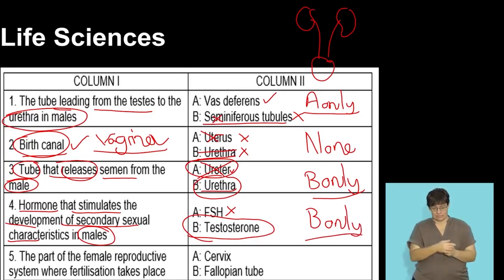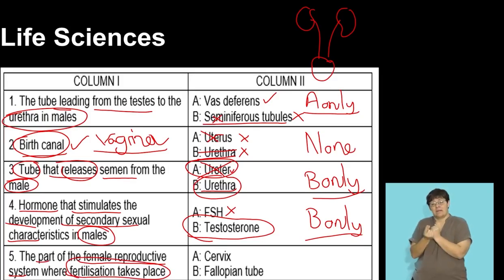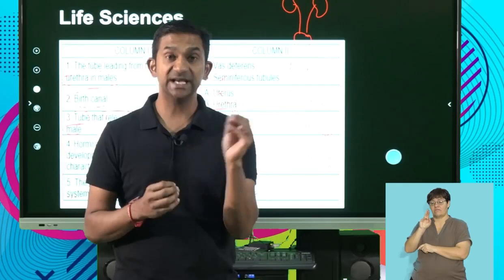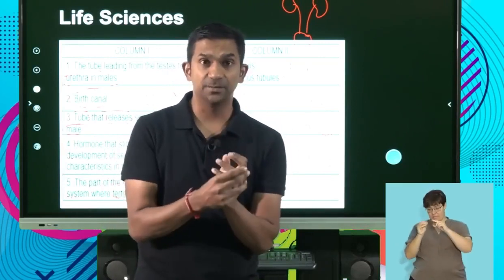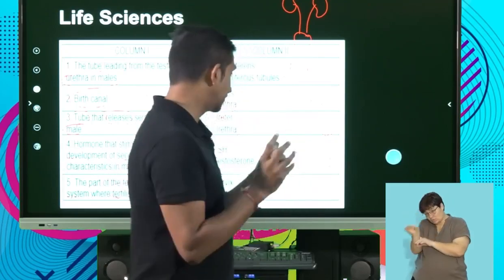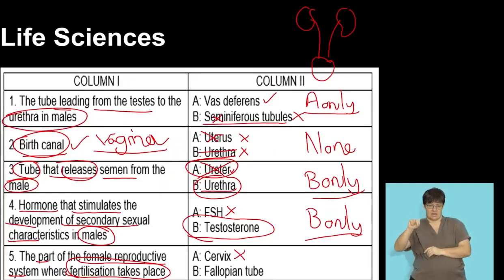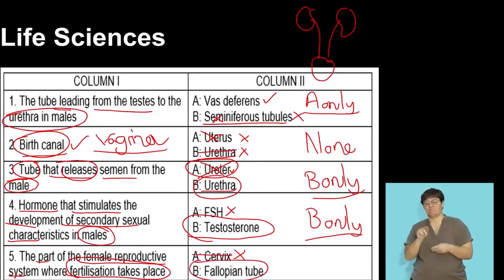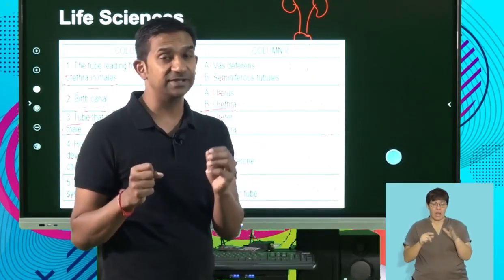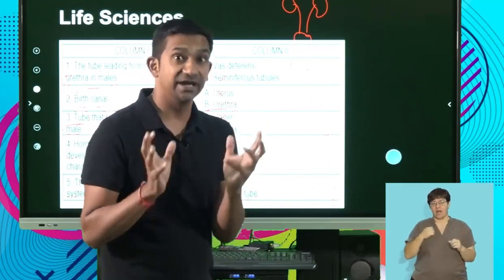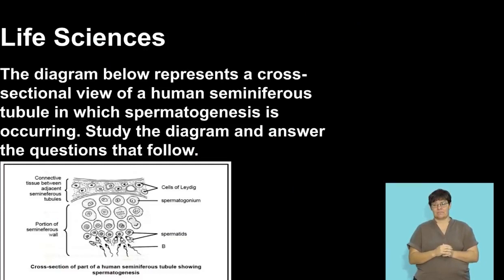The fifth part: the part of the female reproductive system where fertilization takes place. Fertilization happens in the fallopian tube — after ovulation, when the egg enters the fallopian tube, a sperm that has entered the body will fertilize the egg there. The cervix is the opening between the vagina and the uterus, so it's certainly not that. The answer is B only. Read these options carefully and avoid rushed decisions.